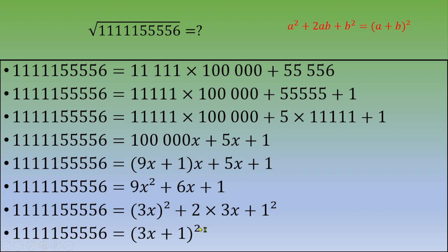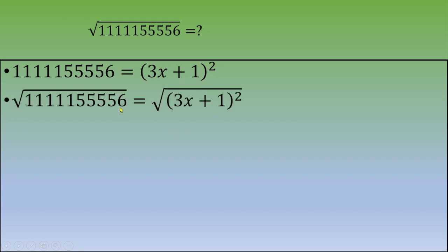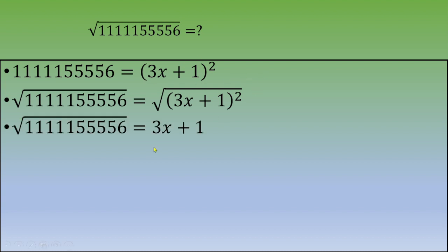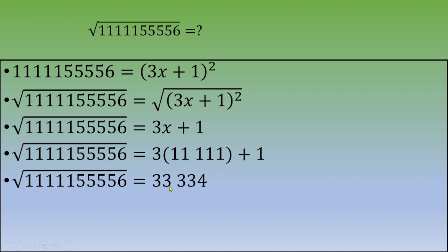So let's recap. The original number can be written as three x plus one, squared. Therefore, the square root of this number equals the square root of three x plus one squared, which, focusing on the positive root, is simply three x plus one. Since x equals eleven thousand one hundred eleven, we do the math and get thirty-three thousand three hundred thirty-four. That is the final answer.